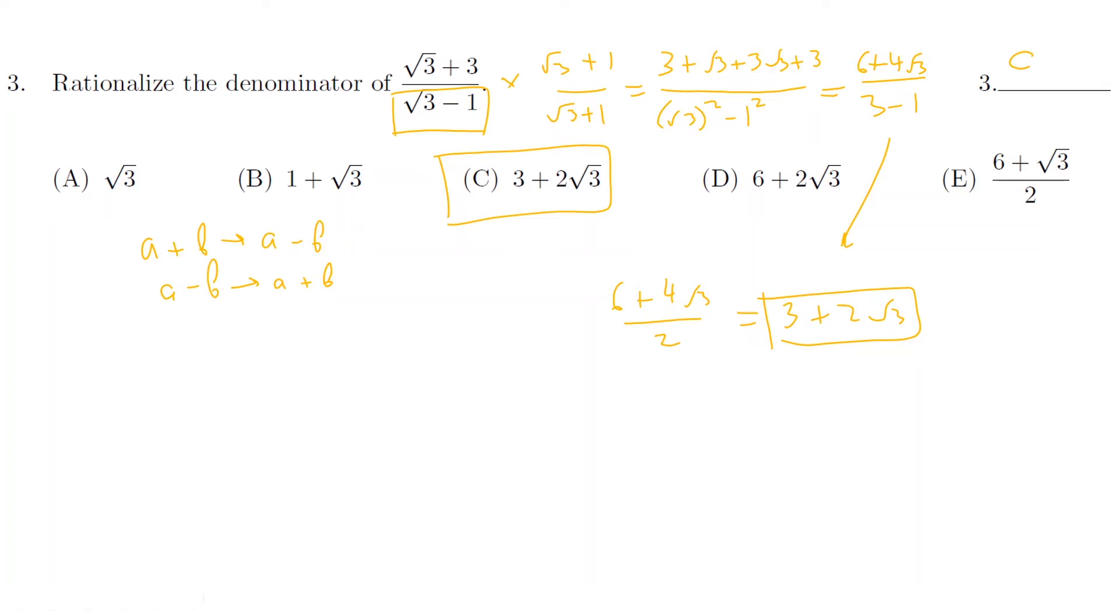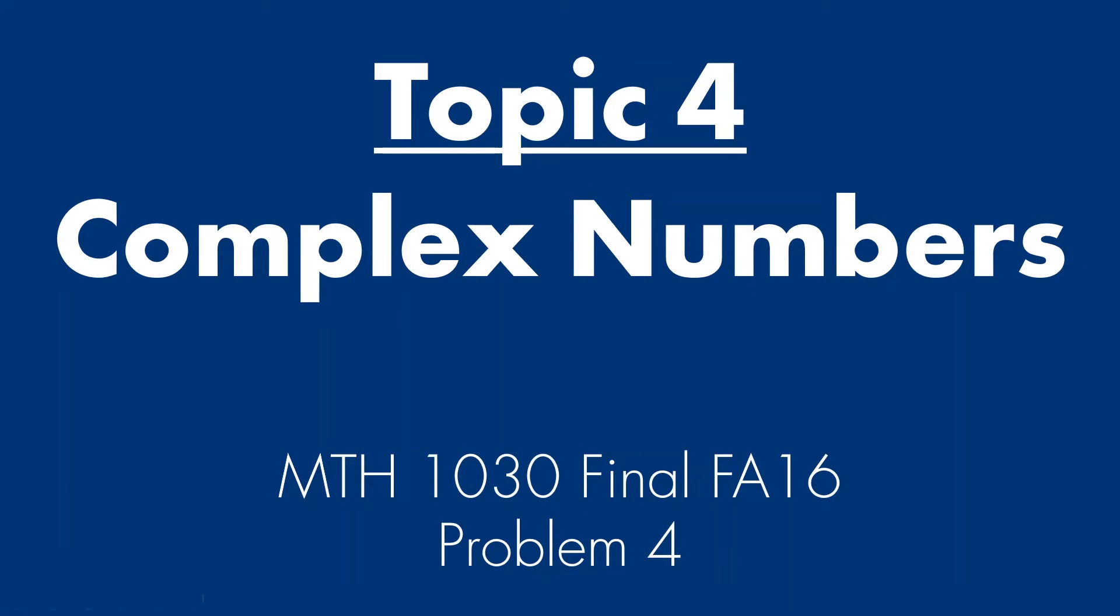So again, conjugate for a plus b is a minus b. Conjugate for a minus b is a plus b. Next. Next topic, complex numbers.